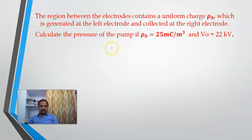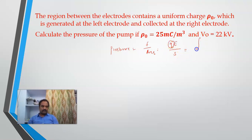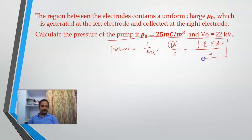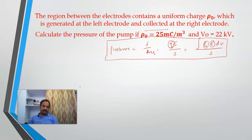Pressure is equal to force per unit area, and force is Q·E. Since Q is not directly available, I use rho_V dV. I have rho here, but I do not have the value of E. So I should compute E first, and then compute the pressure. Let us compute E.